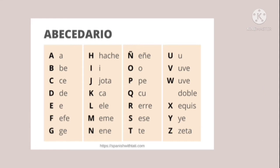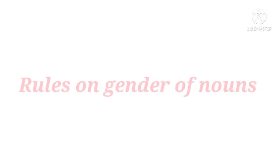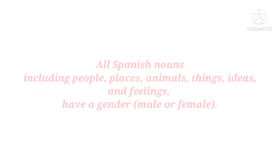Now, let's proceed to our next topic. Rules on Gender of Nouns. All Spanish nouns, including people, places, animals, things, ideas, and feelings, have a gender,